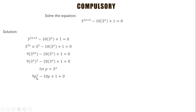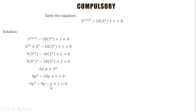Let's see whether we can factor. We multiply 9 by 1 (which is a times c) to get 9. Two factors of 9 that add up to negative 10 are negative 9 and negative 1. So we do the splitting and factor to obtain the factored form.